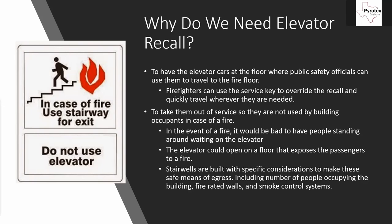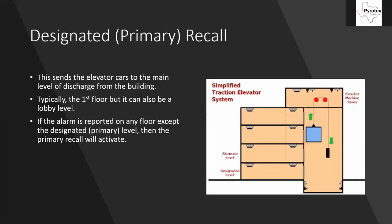The first function of elevator recall is primary recall - called 'designated recall' in the codebook. This is the floor designated by the authority having jurisdiction as the floor with the main means of egress; this is where the car should first go if any alarm is reported anywhere in the building. In this diagram, the column of smoke detectors on the left-hand side will not activate elevator recall because only devices associated with elevator equipment - elevator lobbies, the machine room, and the hoist way - activate recall. Devices not on the designated level trigger primary recall; the detector on the designated level and those down in the pit would not send the car to the first floor, but detectors on the second, third, fourth floor and machine room on the roof would.